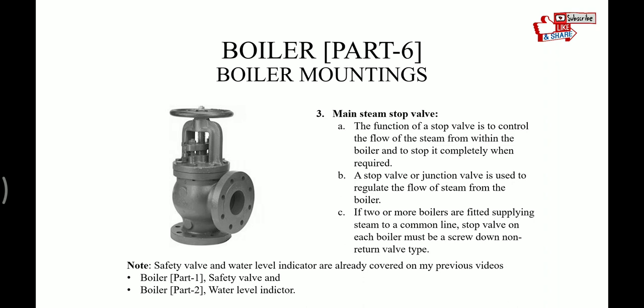Main steam stop valve. The function of the stop valve is to control the flow of the steam from within the boiler and to stop it completely when required. A stop valve or junction valve is used to regulate the flow of steam from the boiler. If two or more boilers are fitted supplying steam to common line, stop valve on each boiler must be screwed down non-return valve.